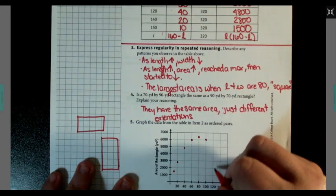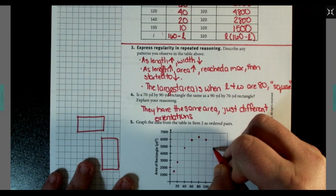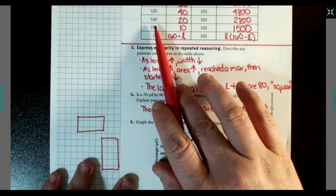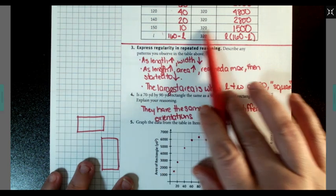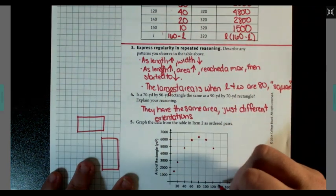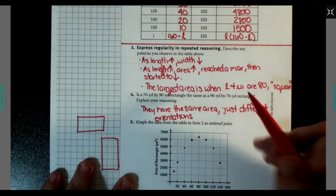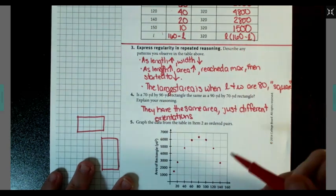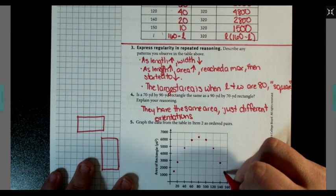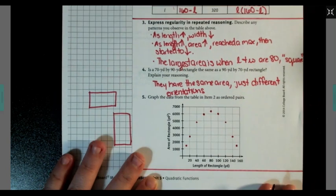We have 120, 4800. We have 140, 2800. And lastly, we have 150, 1500. As such.